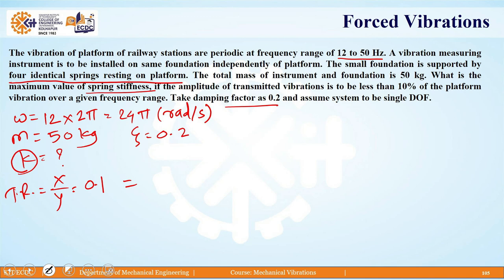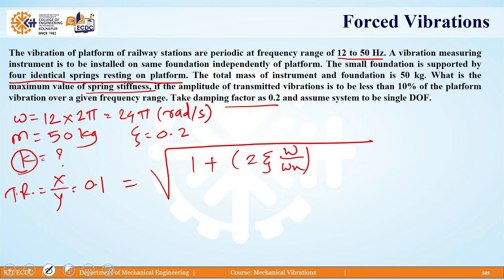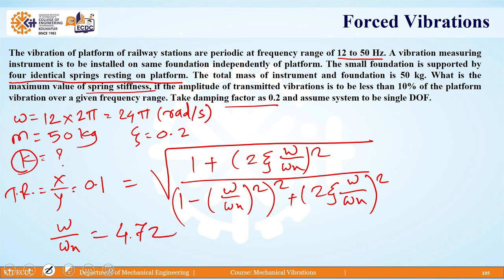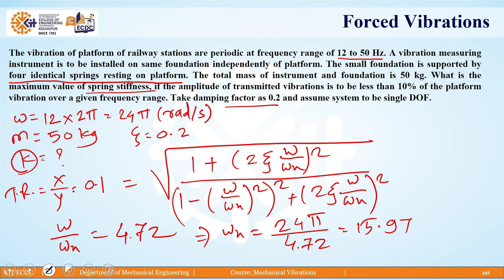We know the formula for transmissibility ratio: [1 + (2ζ ω/ωₙ)²] divided by [(1 − (ω/ωₙ)²)² + (2ζ ω/ωₙ)²], all under a square root. Solving this for omega/omega_n, we get the value as 4.72. With omega as 24π, omega_n equals 24π divided by 4.72, which gives 15.974 radians per second.